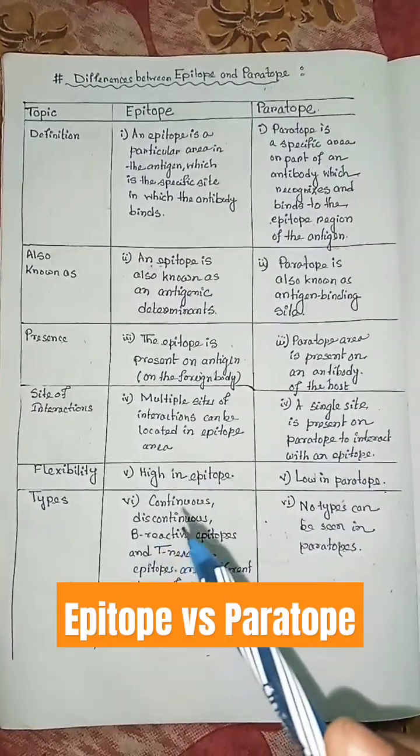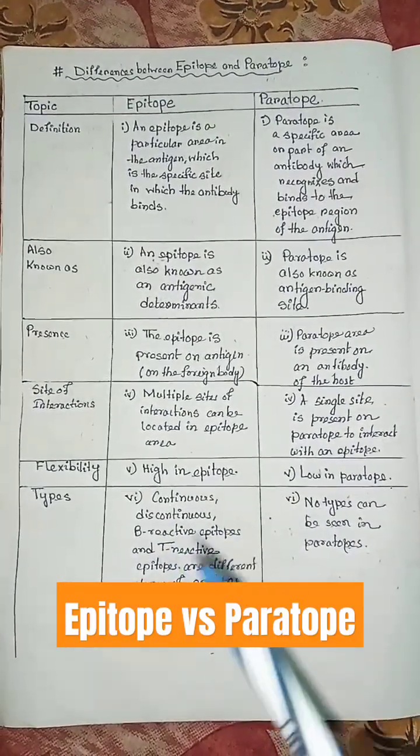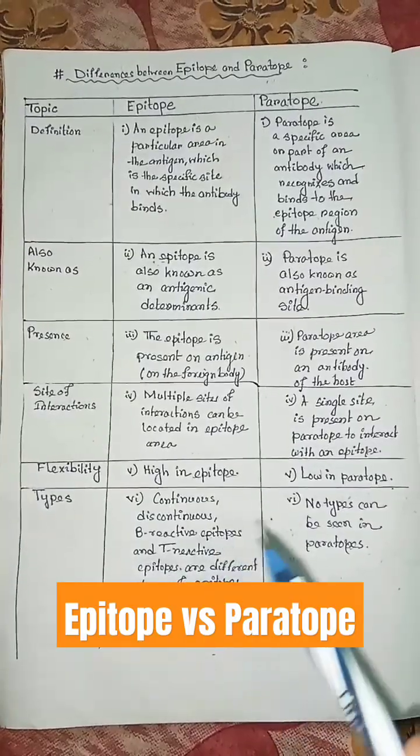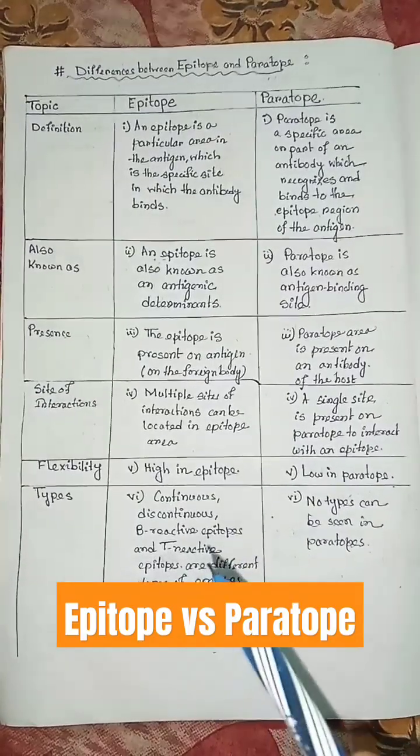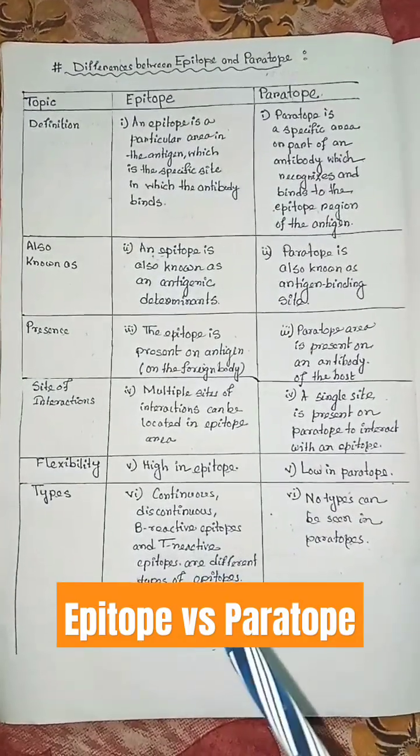Types: continuous, discontinuous, B-reactive epitopes, and T-reactive epitopes are the different types of epitopes.